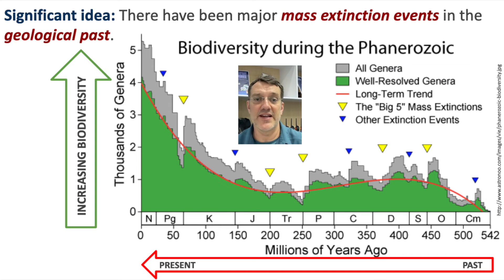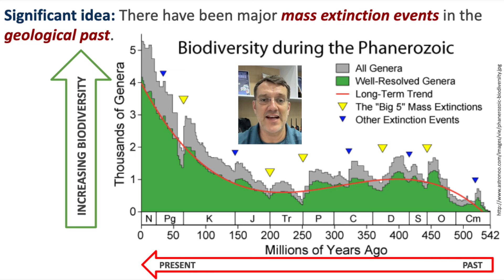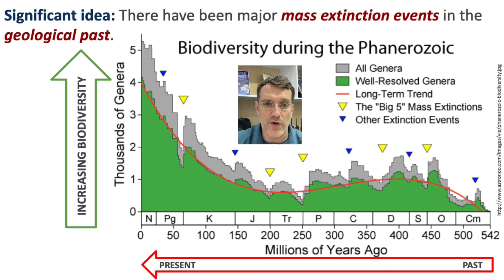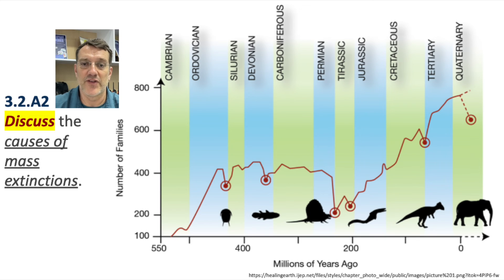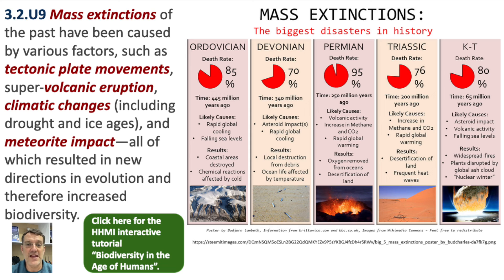One of the big ideas you need for ESS is that there have been mass extinction events in Earth's past, indicated on graphs by sharp drops in the number of species on the planet. Here are the major mass extinctions documented so far, with their names and timings.